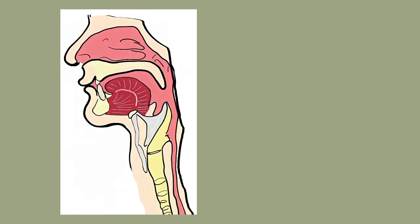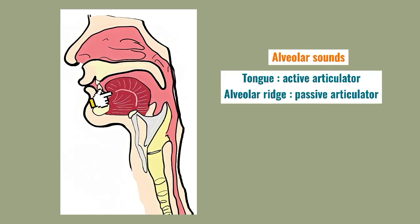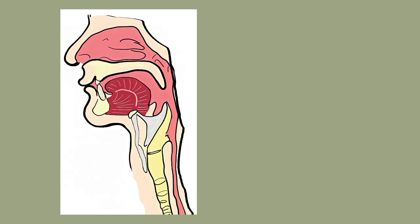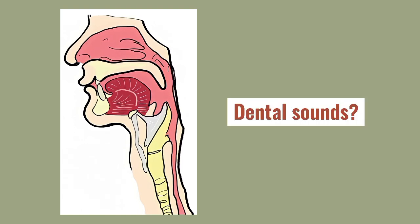To help you better understand passive and active articulators, let's take an example. To produce alveolar sounds, the tongue is the active articulator and the alveolar ridge is the passive articulator, because the tongue moves to the alveolar ridge to produce alveolar sounds like 'd, d.' Can you guess — for dental sounds, what is the passive and what is the active articulator?